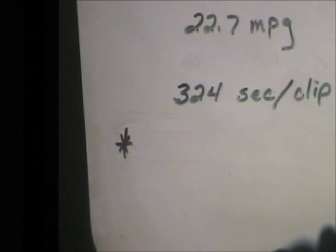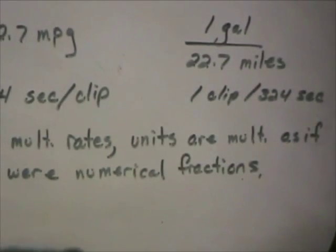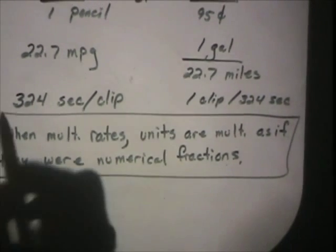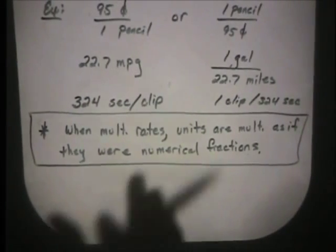When multiplying rates, units are multiplied as if they were numerical fractions, which is so important, I'd like you to box it. But without seeing an example, I don't think it's going to make much sense to you. So, you guys have a problem about Jason.